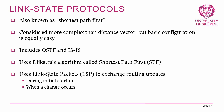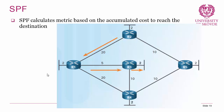Looking at how SPF calculates the metric, it is done based on the accumulated cost to reach the destination. In a scenario where a packet is initiated from router one destined to router five, there are three paths: R1→R2→R5 with cost 20+10=30; R1→R4→R5 with cost 5+10+10=25; and R1→R3→R4→R5 with cost also 20+10=30. The SPF algorithm will consider R1→R4→R5 to be the best route because the combined cost is the cheapest, even if the number of hops is more.